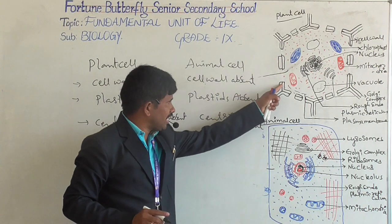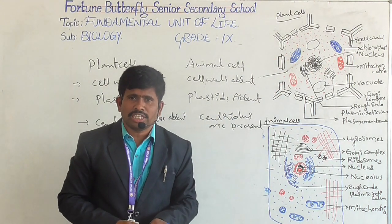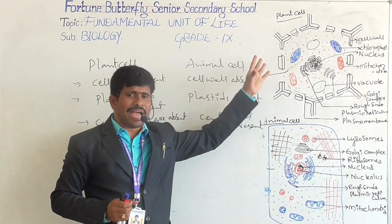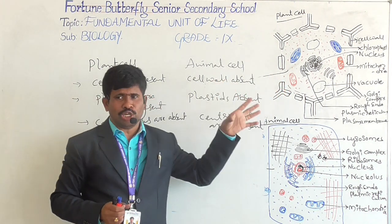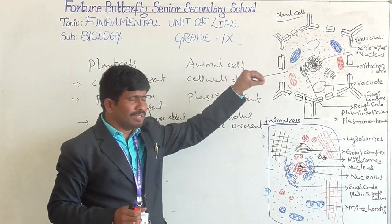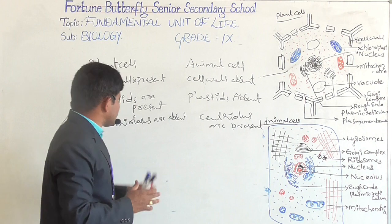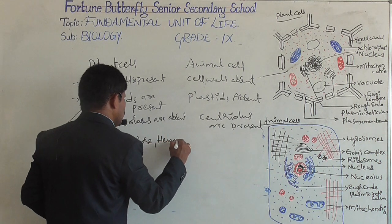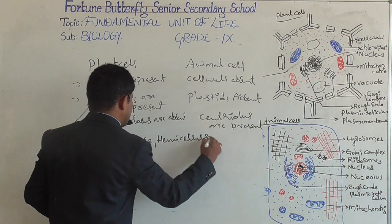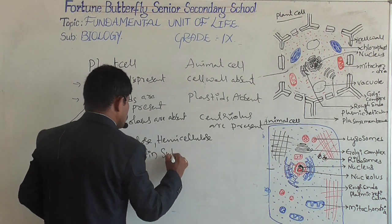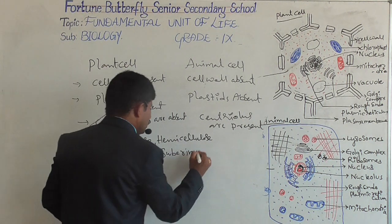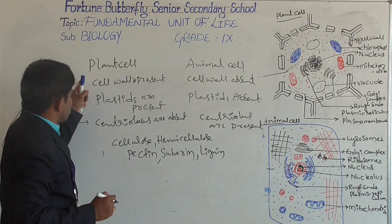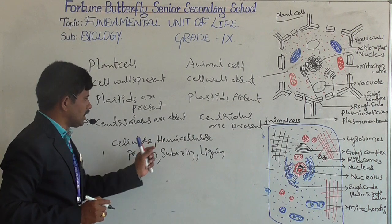The outermost layer of the plant cell is called the cell wall. The cell wall is present in plant cells and also in bacterium cells. In higher plants, the cell wall is made up of cellulose, hemicellulose, pectin, and suberin.